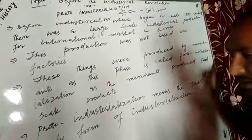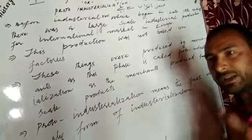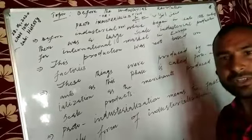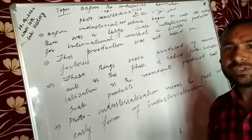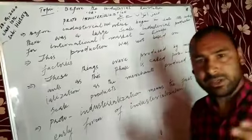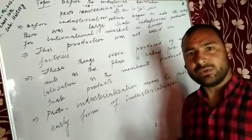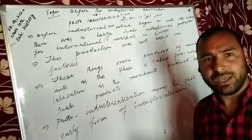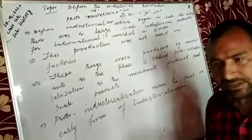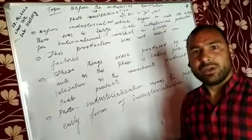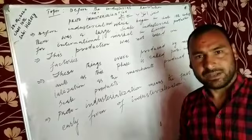Let me recap: before the Industrial Revolution — Sanati Inqlaab se pehle — when people needed something, where did it come from? At that time there were no industries. To fulfill these needs, merchants — tajar loog — would either make the goods themselves or hire workers, paying them wages to get things made. This phase is called the Proto-Industrialization phase.